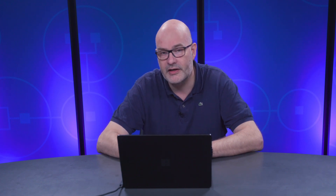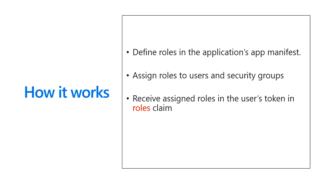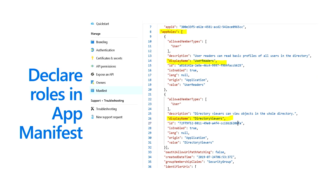So how does it work? You have to define the role in the application manifest, then you assign roles to users and security groups, and the assigned roles will be in the roles claim. This is a screen dump of the application manifest — we used this in a previous video to configure application permissions as well. They use roles from the type application. Here we're going to create an entry in the app roles array with allowed member types of type user. These are user application roles. They have a display name — for example, user readers and directory viewers.